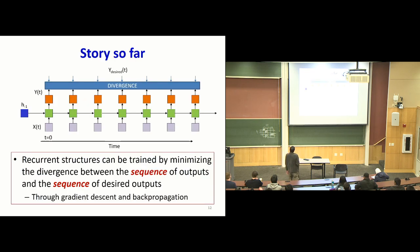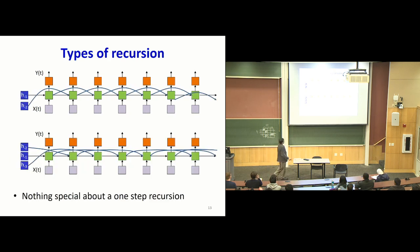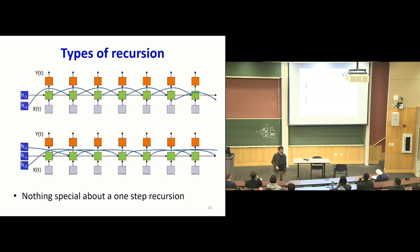Here's the story so far. We've seen how recurrent structures can be trained — by minimizing the divergence between sequences of outputs and sequences of desired outputs — done through gradient descent and BPTT. There's nothing special about one-step recursion; you can have recursion over multiple instances of time. And if the recursion gets deeper, you're going to have more initial states to keep track of.